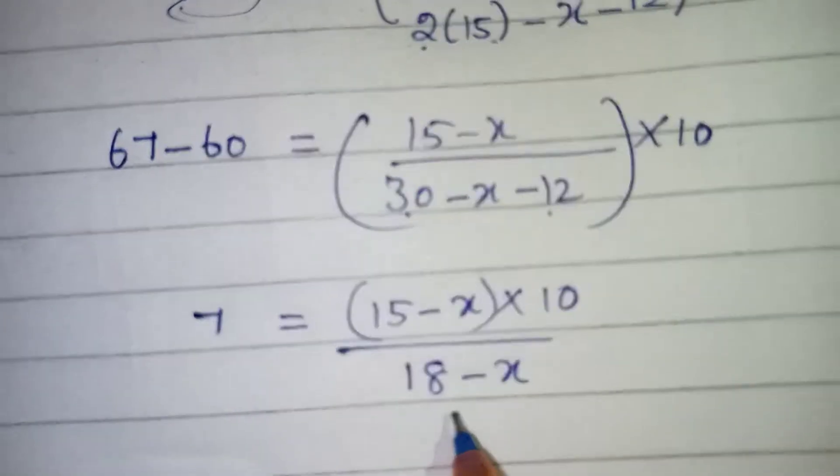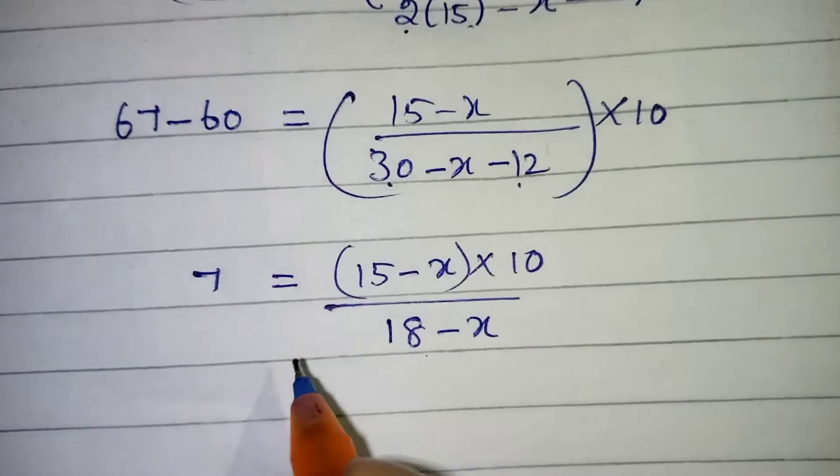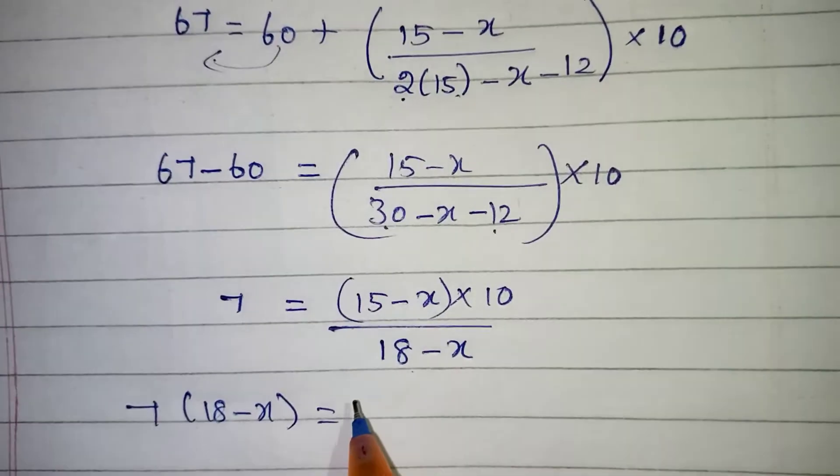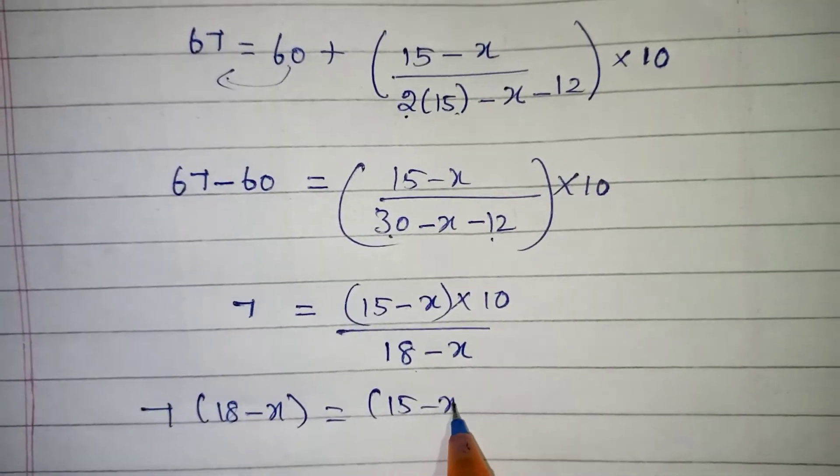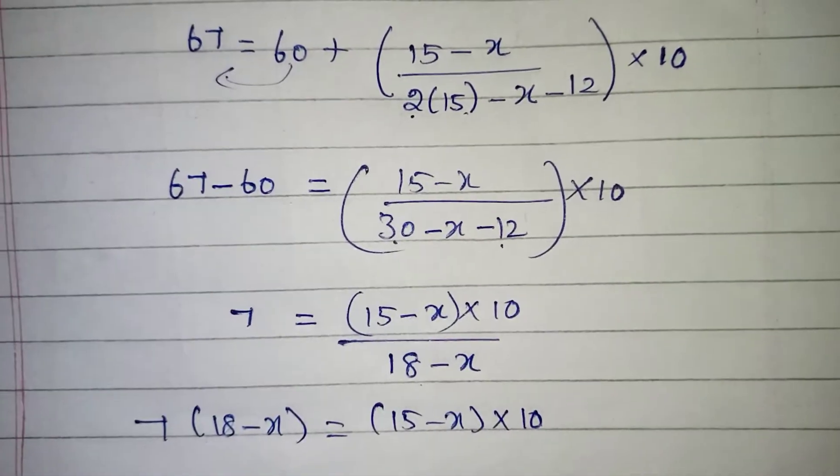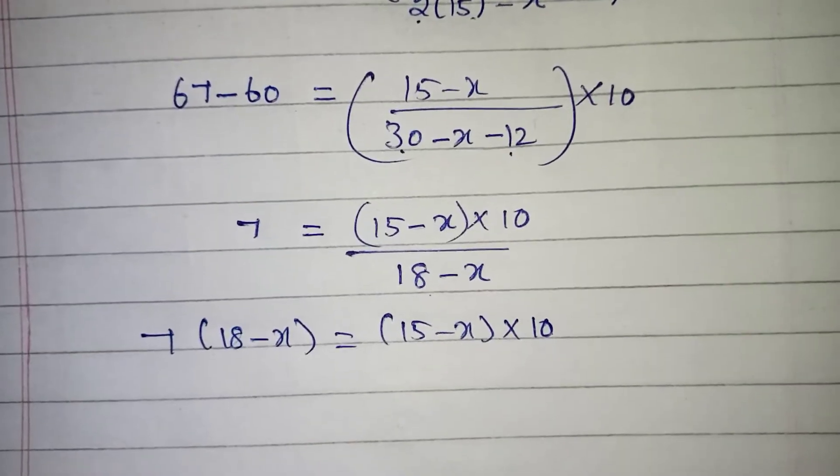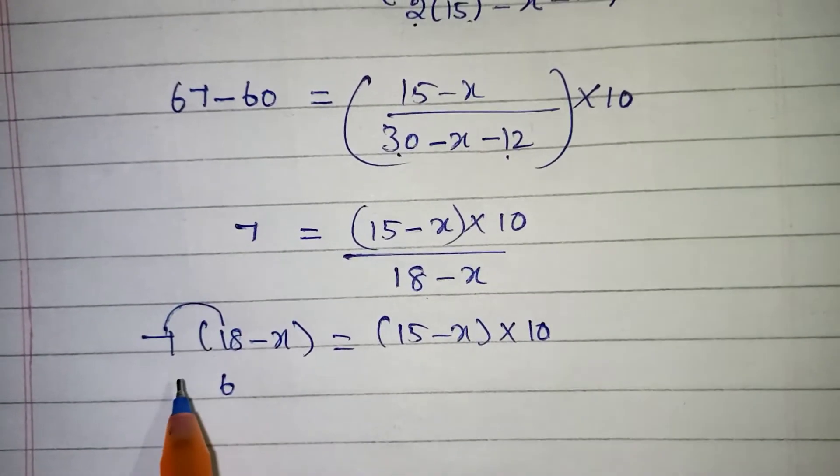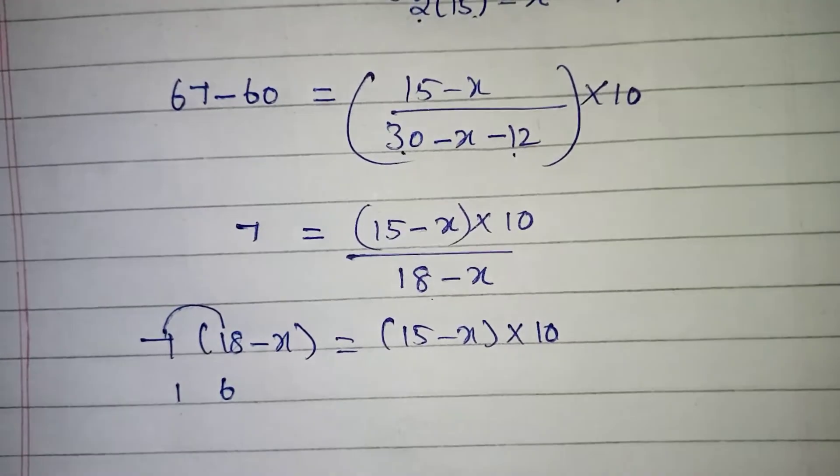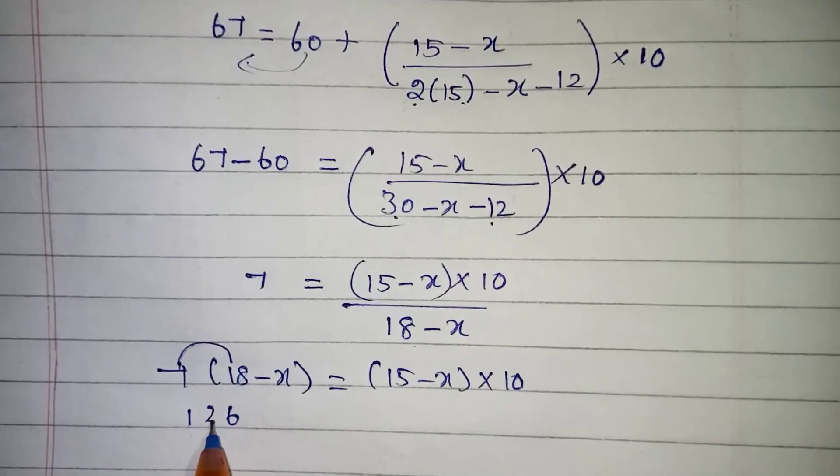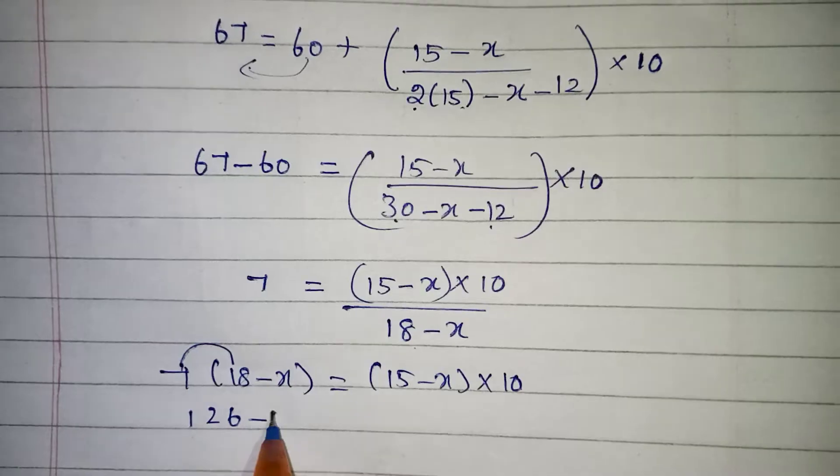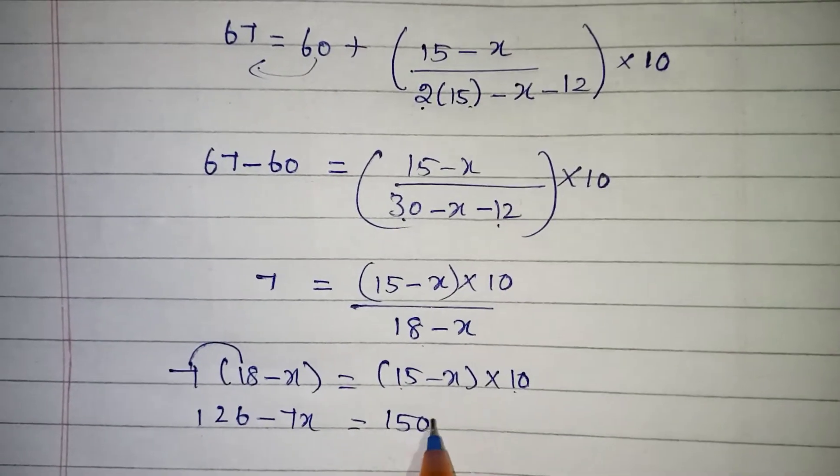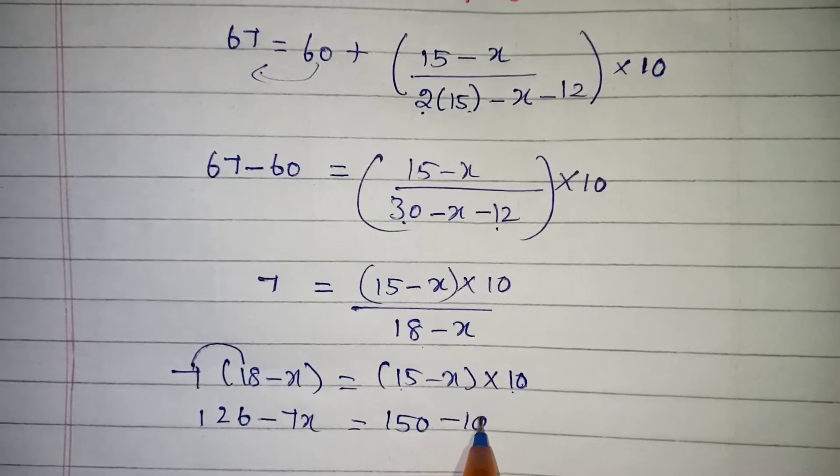Now the denominator 18 minus X should be taken to other side. Now we can write 7 into 18 minus X which is equal to 15 minus X into 10. Now we have to multiply the 7 and 10 inside. So 7 into 18, 126 minus 7 into X, 7X. And here 15 into 10 will be 150 and 10 into X will be 10X.